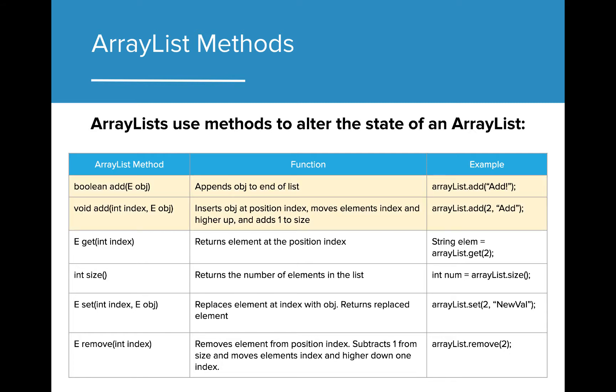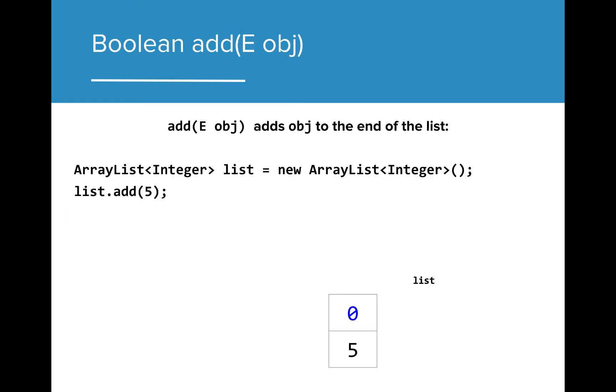The first method we're going to look at is the Add method. The Add method adds an object to the end of an ArrayList. When we add an initial value, it will be placed at the zeroth index. The Add method returns the value true when the ArrayList is able to successfully add a value to the end. As we can see here, as we add values to the list, those values are now populated in the ArrayList at the next available index.